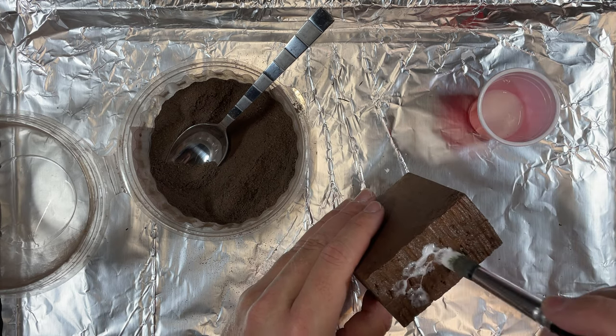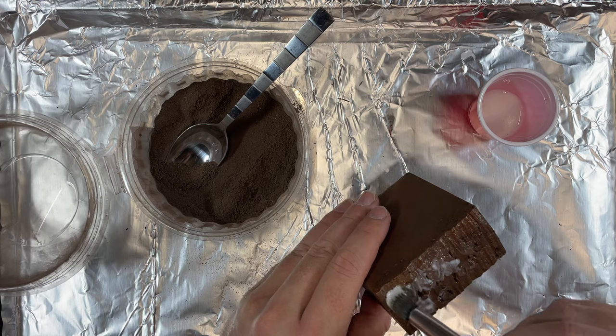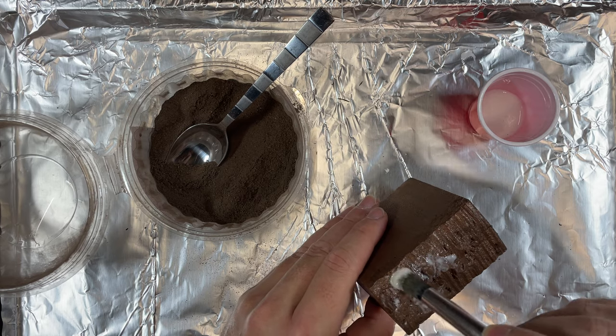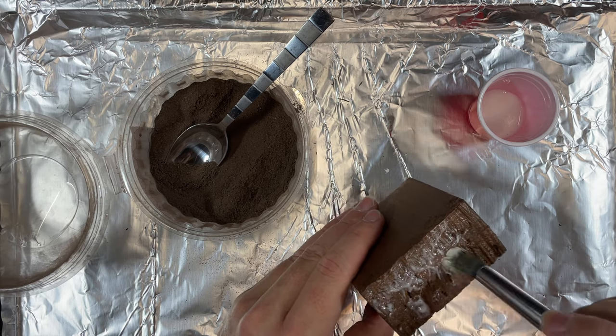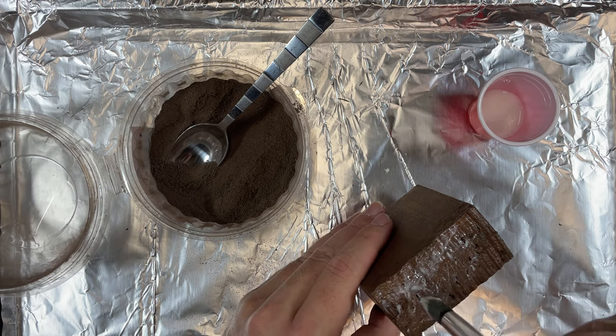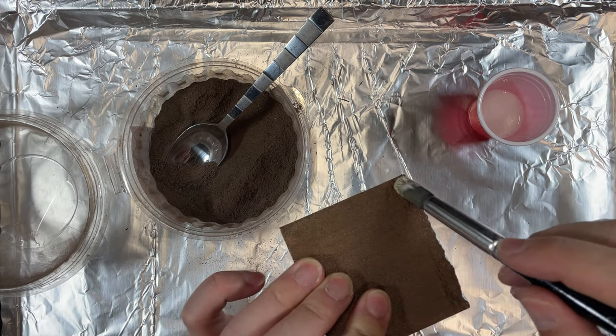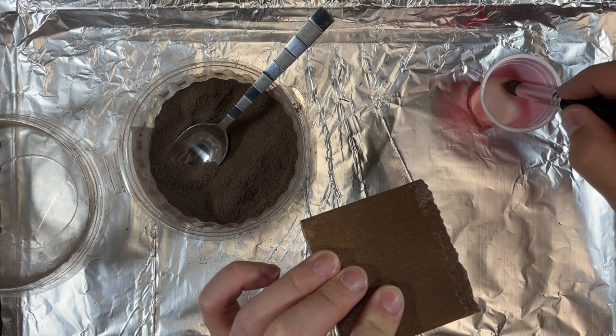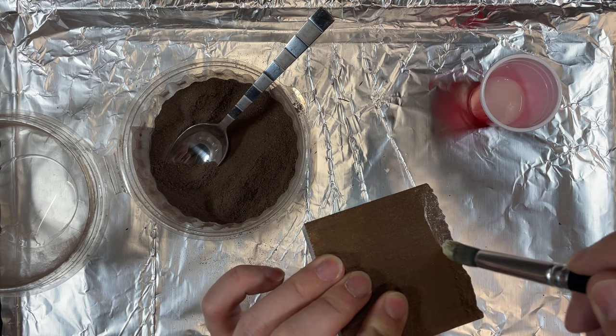And then I just took some straight PVA glue and applied it to the sides. One thing I didn't show here is I actually textured in about a quarter of an inch with the rolled up tin foil on the top side as well, which you see me applying glue to here.